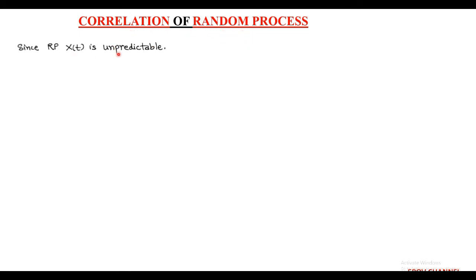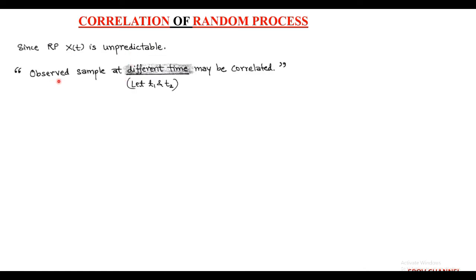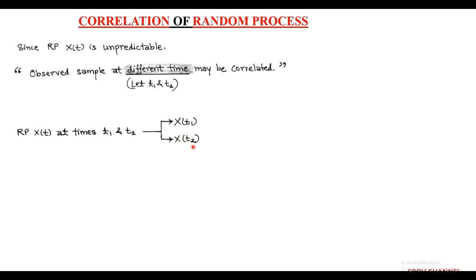Hello friends. In this session we are going to discuss correlation of random process. The random process is unpredictable, but the observed sample may be correlated at two different times, say t1 and t2. The random process X(t) at time t1 and t2 is given as X(t1) and X(t2) respectively, and collectively called an ensemble, which is the set of random variables.